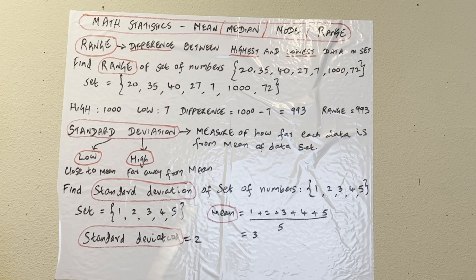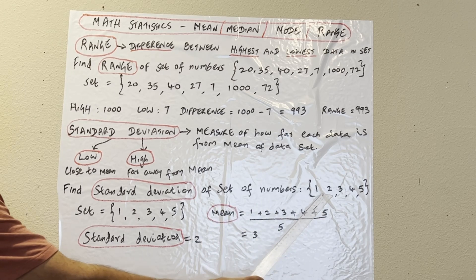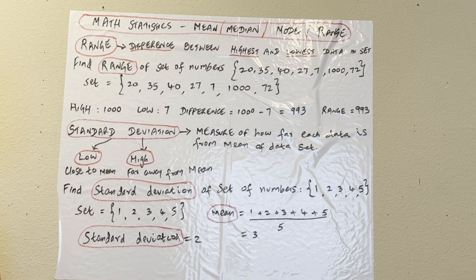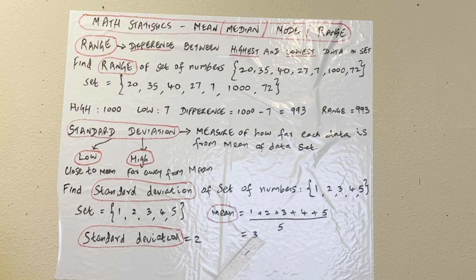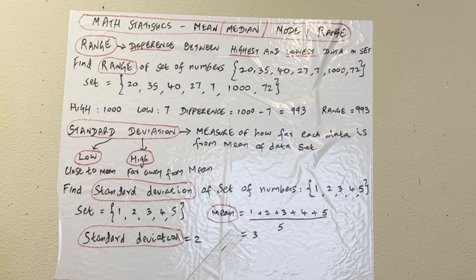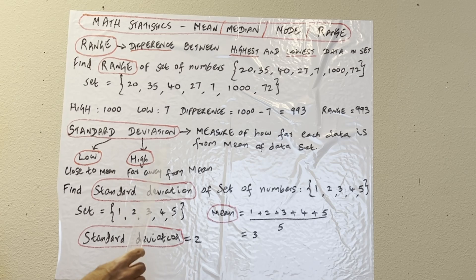Find the standard deviation of the set of numbers: 1, 2, 3, 4, 5. We have to find the mean first. 1 plus 2 plus 3 plus 4 plus 5 divided by 5 equals 3, so the mean is 3. We then look at how far each data point is away from 3. The standard deviation is 2 for this example.